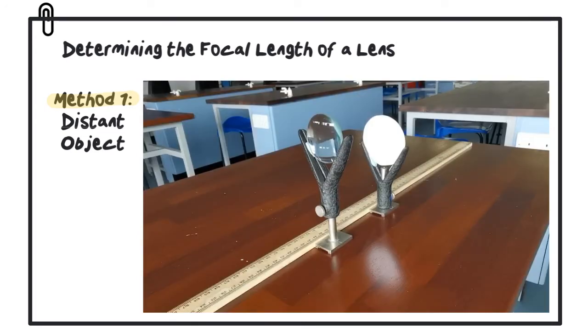If we look at what's happening in terms of light rays, we have light entering the lens from a distant object, which means those rays are approximately parallel. As they pass through the lens, they converge towards a single point called the focal point. When we get a clear image on the screen, we're identifying the focal point. So the focal length is the distance between the lens and the screen.